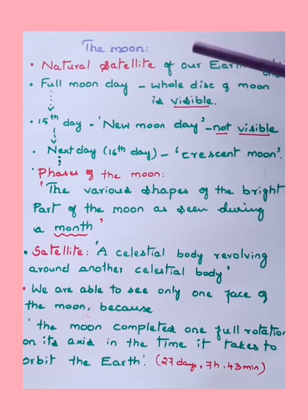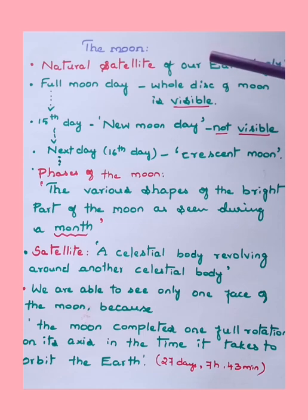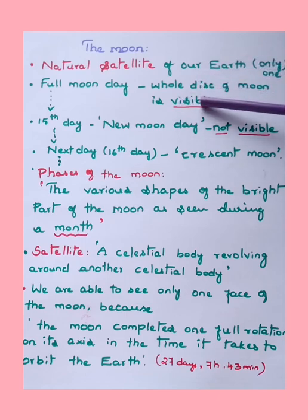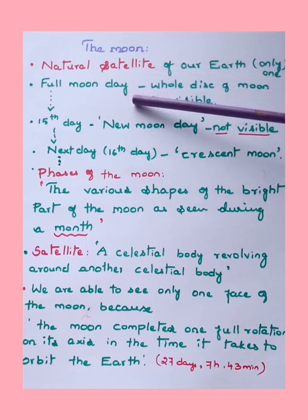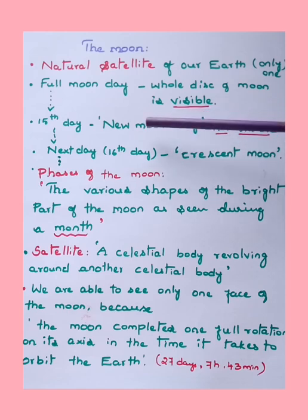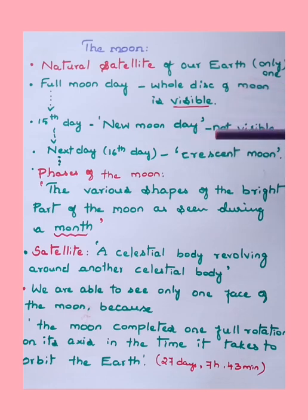The moon is the only natural satellite of our earth. Satellites are of two types: natural satellite and artificial or man-made satellite. When the whole disk of the moon is visible, that day is called full moon day. On the 15th day after full moon, the moon is not visible — that day is called new moon day.